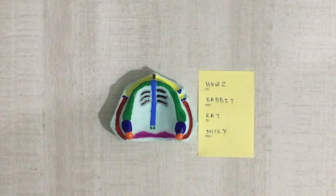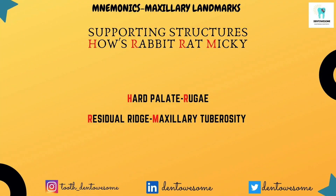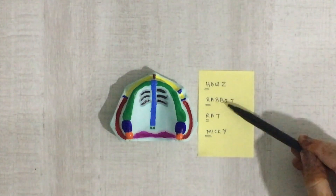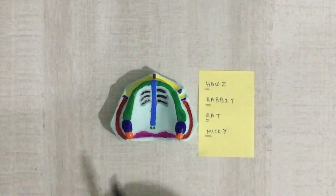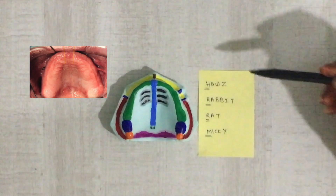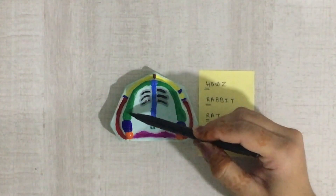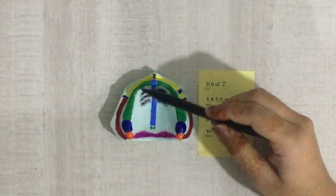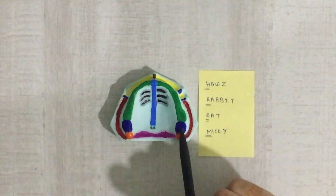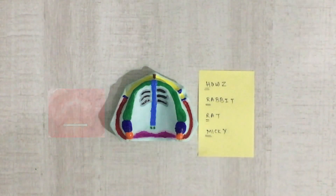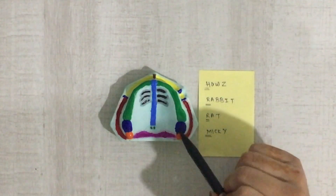Now starting with the supporting structures of the maxilla. The mnemonic is 'house, rabbit, rat, mikey.' You can see the hard palate with black color elevations and depressions called rugae. The green color area is the residual alveolar ridge. The dark blue color prominent areas are the maxillary tuberosity. So the supporting structures of maxilla are: rugae, residual alveolar ridge, and maxillary tuberosity.